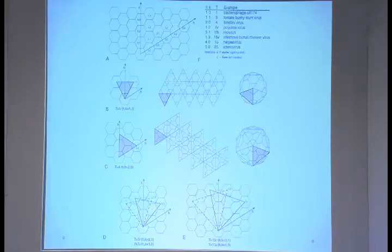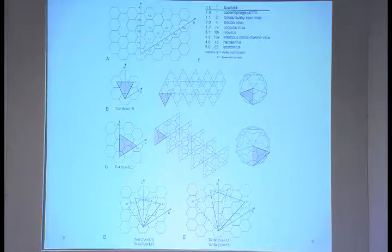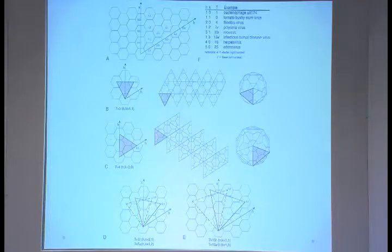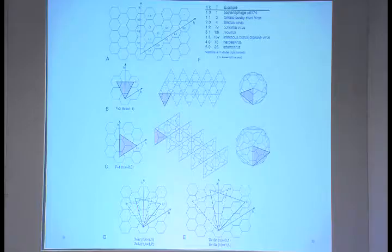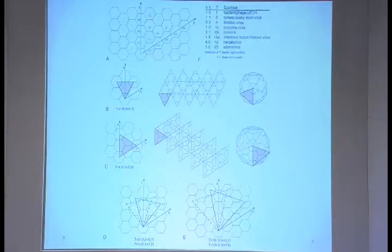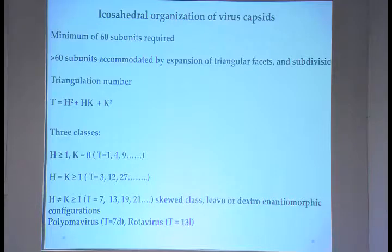How do you make a larger virus from the same icosahedral setup if you have more than 60 subunits? The concept of triangulation number comes in. Depending on various values of H and K, you can have different size viruses with different triangulation numbers. More than 60 subunits can be accommodated by expanding the triangular faces and then subdividing them, so that proteins have specific areas to occupy in each triangular facet.